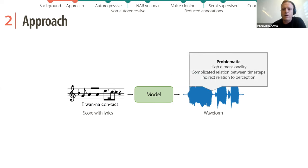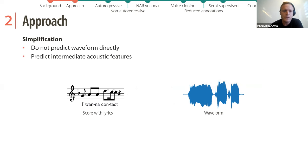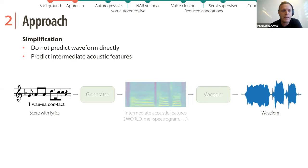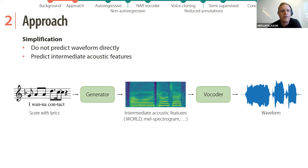Working with waveforms is quite problematic: they have very high dimensionality, a complicated relation between time steps, and quite an indirect relation to perception. One simplification we make is to not predict the waveform directly but predict intermediate acoustic features such as WORLD vocoder features or mel spectrogram, and then have a second model — the vocoder — that predicts the final waveform.